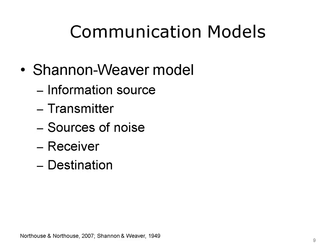Northaus and Northaus discuss a variety of communication models. One of the oldest is known as the Shannon and Weaver model. Developed in 1949, the model contains five components focused around the message itself: 1. Information source, 2. Transmitter, 3. Sources of noise, 4. Receiver, and 5. Destination. The information source is the actual message content of the conversation.